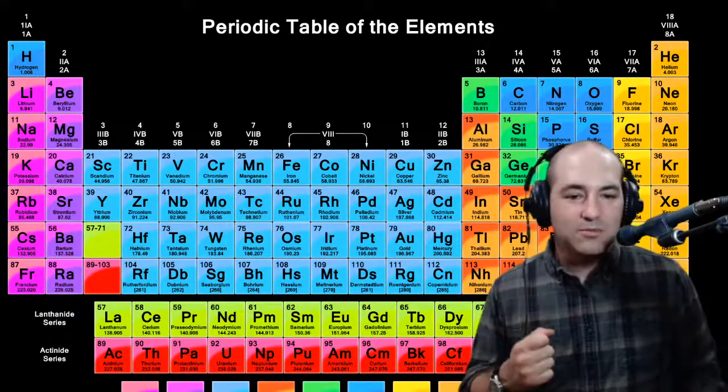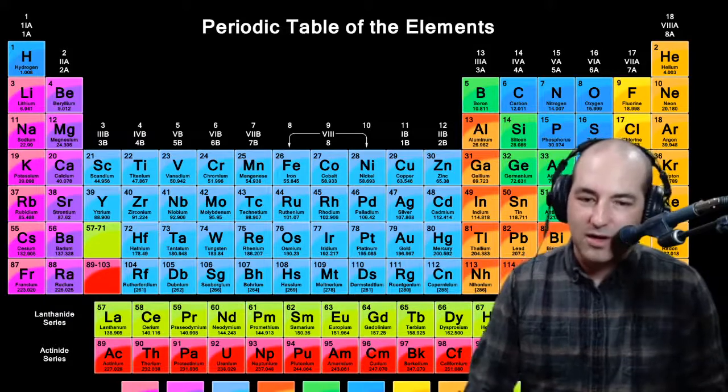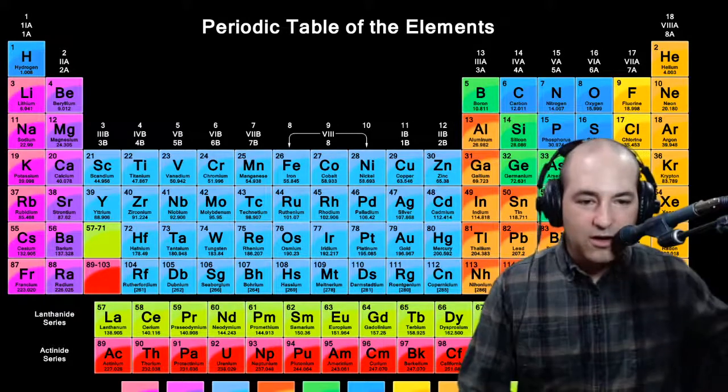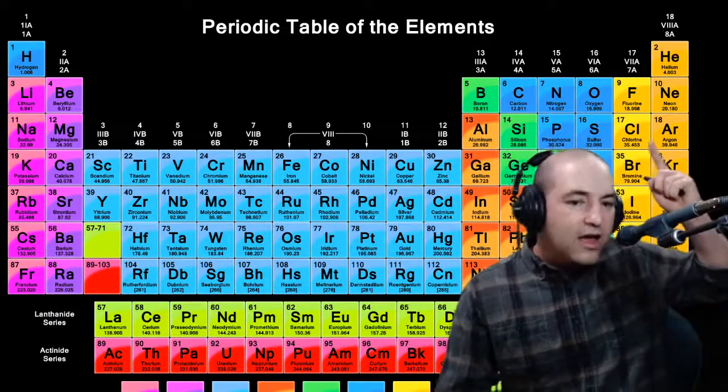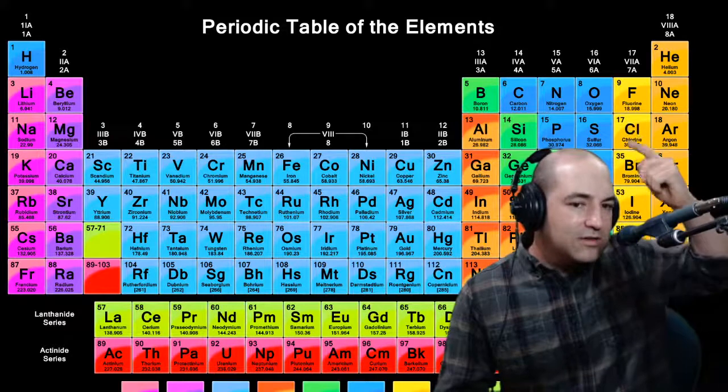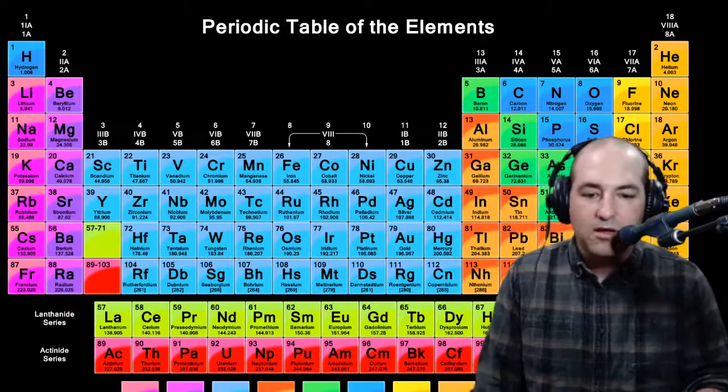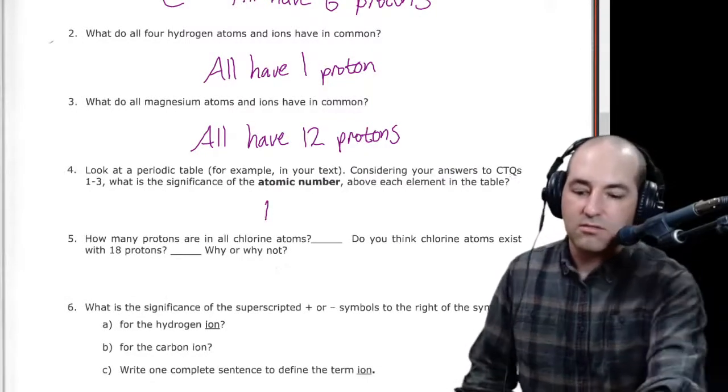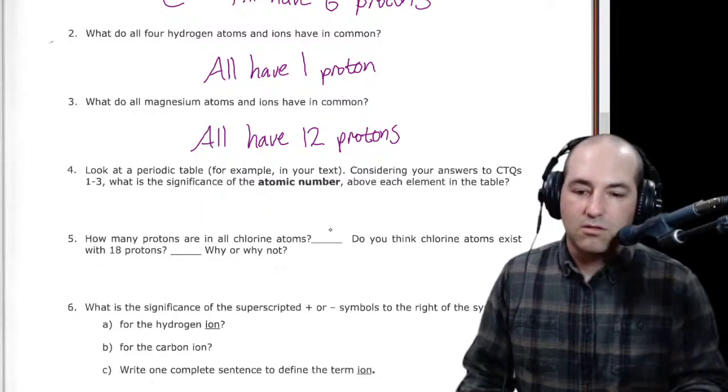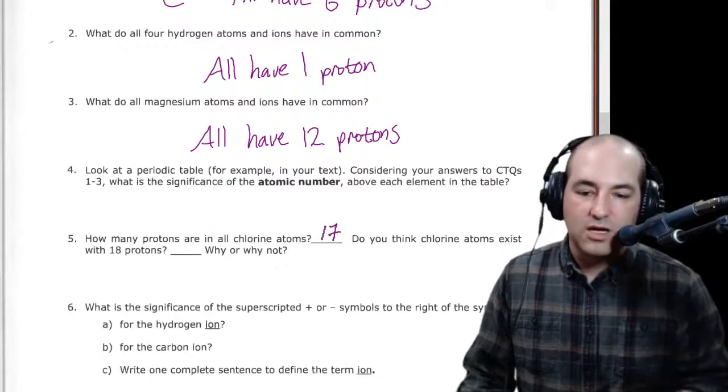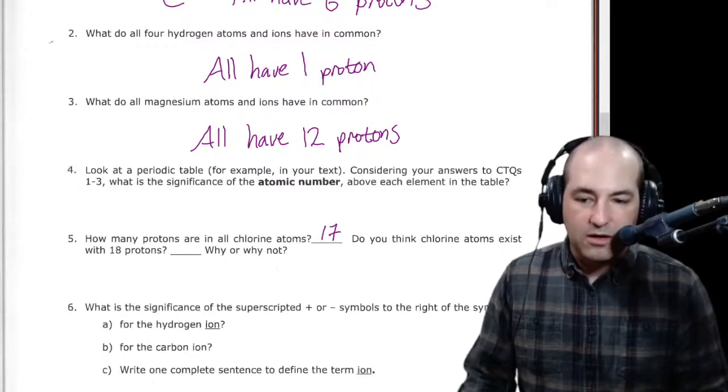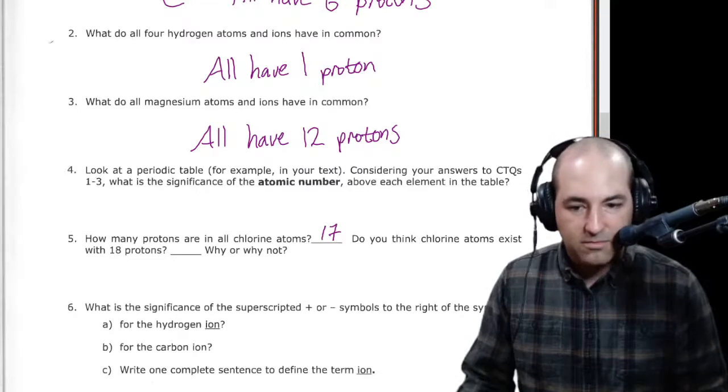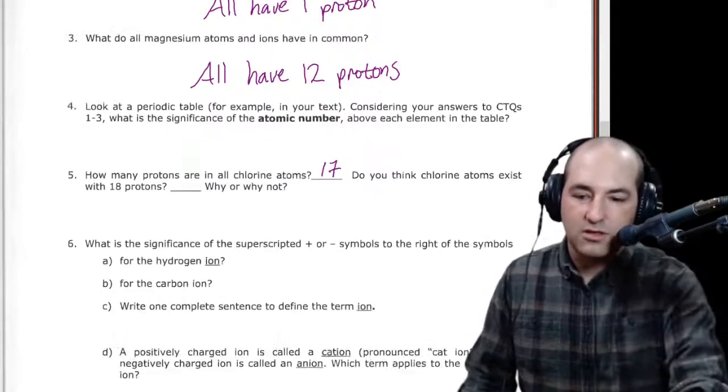If we were in class, it would always be there. You'll have it for quizzes and exams, whatever. So we can always assume that a periodic table is there. So we look at chlorine, which is just over my head here, and we can see that it is number 17. So we can probably make a pretty good guess that that's going to have 17 protons. And do you think chlorine atoms exist with 18? What do you think? I'll leave that to you.